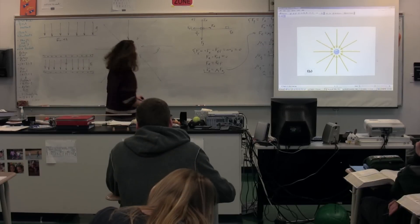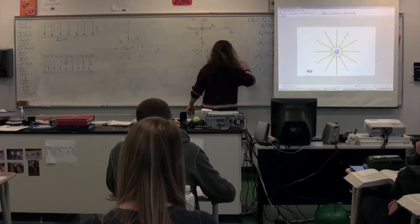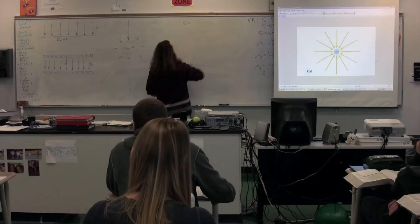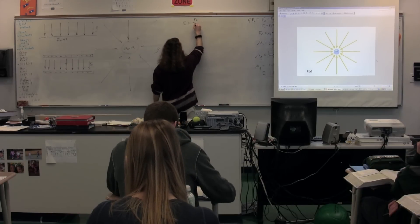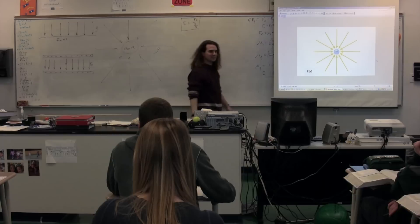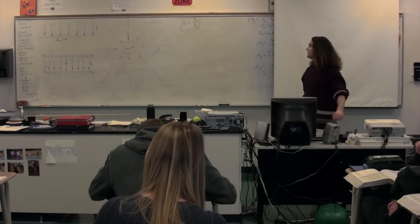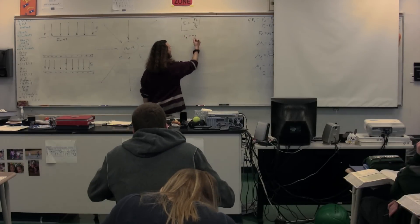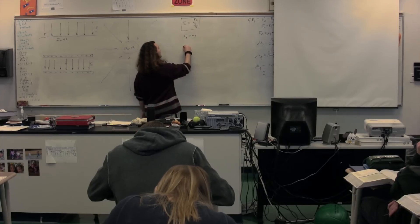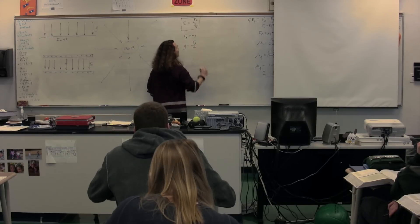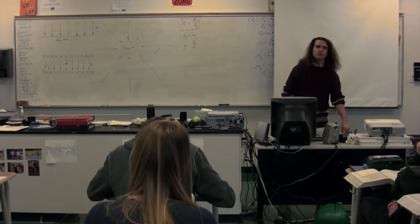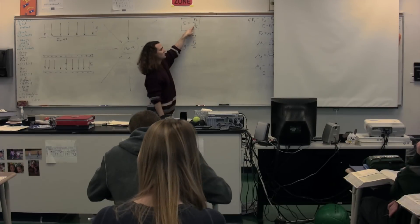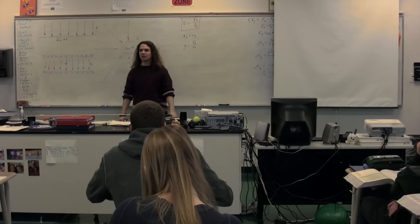We need to define the electric field with specifics. The electric field is equal to the electric force per unit charge — and that is a boxed equation. Note the similarity: the force of gravity equals mass times the acceleration due to gravity, and if you solve for the acceleration due to gravity, that equals the force of gravity per unit mass. We have the acceleration due to gravity in place of the electric field, mass in place of charge, and the force of gravity in place of the electric force.